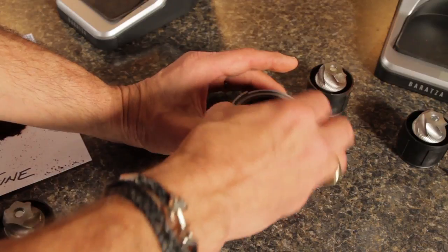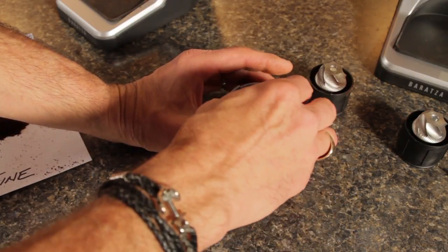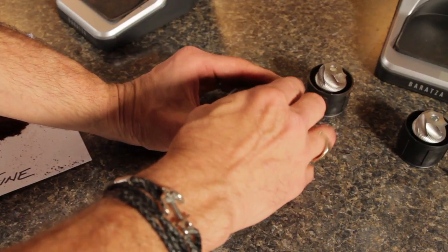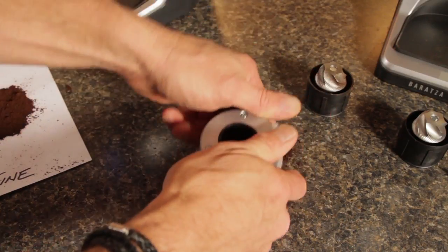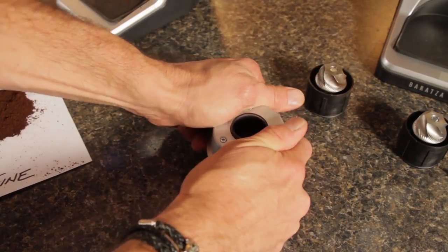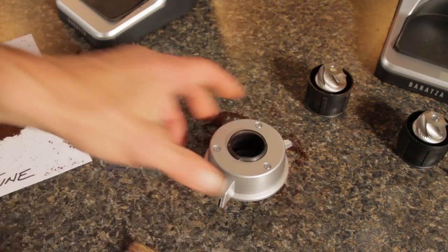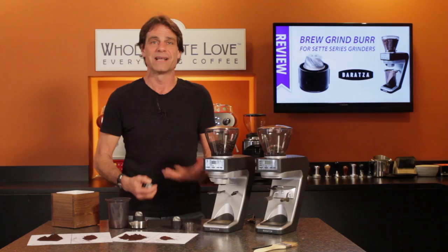Replace the funnel into the burr carrier and then put the burr in place. You can press it into place like that, but it's going to be easier to turn the whole unit over, rest it on the burr and firmly and evenly press on the burr carrier until it pops into place.